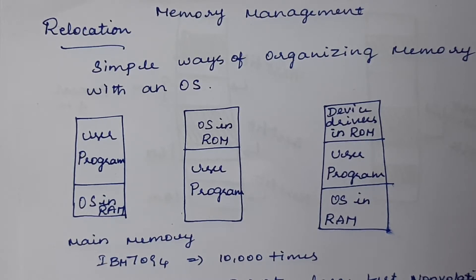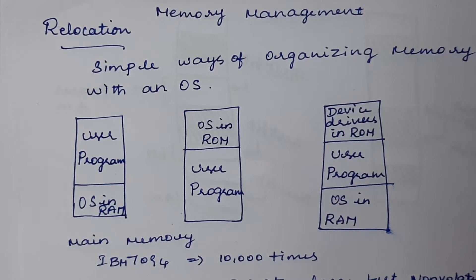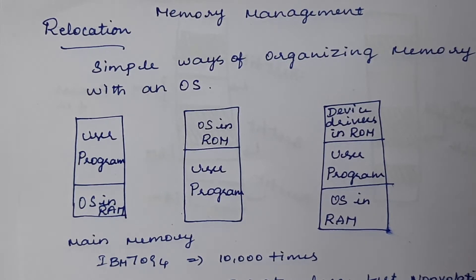In this video we will discuss memory management — a quick overview of all the concepts. Memory management is important because main memory is a critical resource that must be carefully managed. Nowadays, average home computers have ten thousand times more memory than earlier systems like the IBM 7094, and even more than early personal computers.